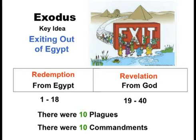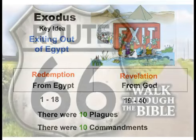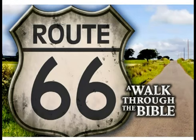The next book: Exodus — coming out of Egypt, redemption from Egypt. Chapters 1 through 18 cover redemption from Egypt, and chapters 19 through 40 cover a revelation from God. How many plagues did God send? He sent 10 plagues to get Pharaoh's attention. There are 10 plagues and 10 commandments — not suggestions. You read all about them in Exodus chapter 20. Exiting out of Egypt — that's the theme of the book of Exodus.